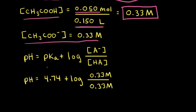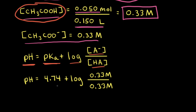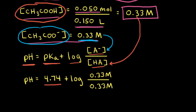To find the pH of the buffer solution, we can use the Henderson-Hasselbalch equation: pH equals pKa plus the log of the ratio of the concentration of the conjugate base divided by the concentration of the weak acid. The pKa of acetic acid at 25 degrees Celsius is 4.74. Plugging in 0.33 molar for both the acetate anion and acetic acid, 0.33 divided by 0.33 equals 1, and the log of 1 equals 0. Therefore, the pH of this buffer solution is 4.74.